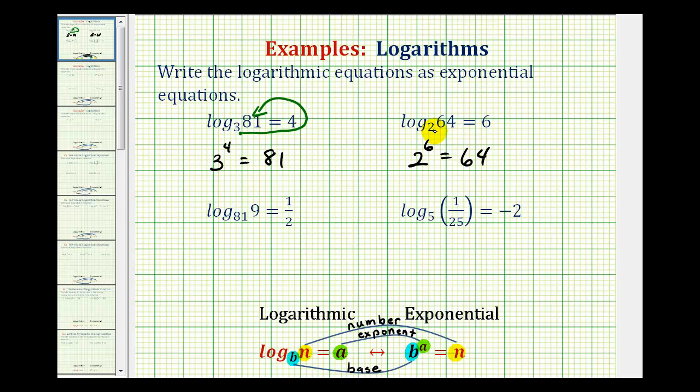Or again, we can start with two, work our way around the equal sign. Two to the sixth equals 64.